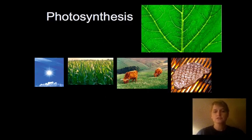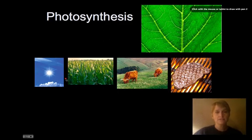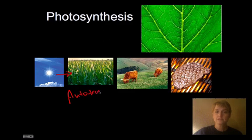This is an extremely important process to life on Earth because all organisms get their energy from the sun. They either do this directly from the sun, as in the case of plants. So these plants would be autotrophs. Autotroph means that it creates its own energy.